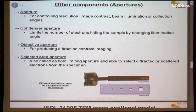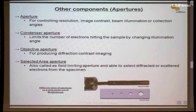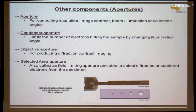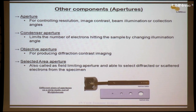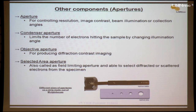Apart from holders, we have different apertures mainly for controlling the resolution, setting the image conditions, or setting the collection angle and convergence angle. The condenser aperture, just beneath the condenser lens, limits the number of electrons hitting the sample and sets the illumination condition. The objective aperture, just beneath the objective lens, is mainly used for diffraction contrast imaging. The selected area aperture, as the name suggests, is for selecting a particular region and getting information from it — it sits just below the back focal plane of the objective lens.